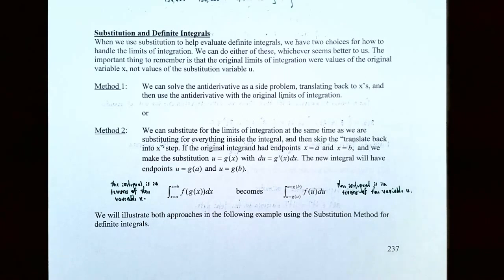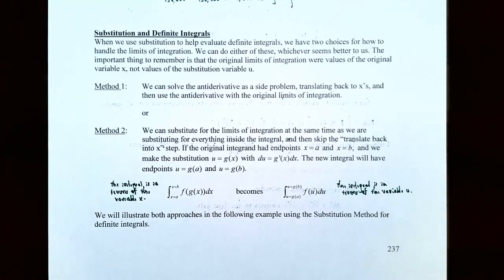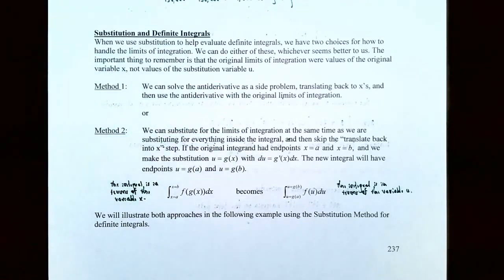The most important thing to remember is that the original limits of integration were values for the original variable x, but they are not values for the limits of integration whenever we make a substitution for the variable u. One method is to solve the antiderivative as a side problem, translating back to x's and then using the antiderivative with the original limits of integration. Or the second method, which we'll use more often, is to substitute the limits of integration at the same time we make the substitution from x to u, so we can skip the step of translating back to x.